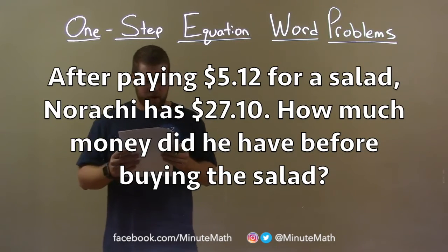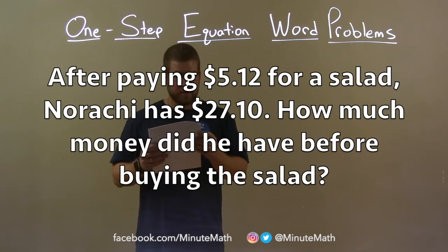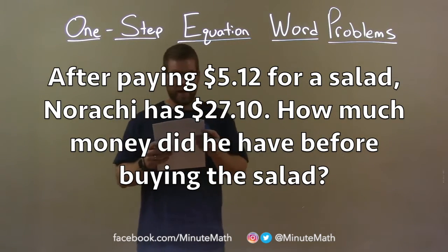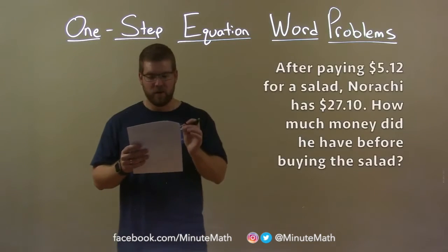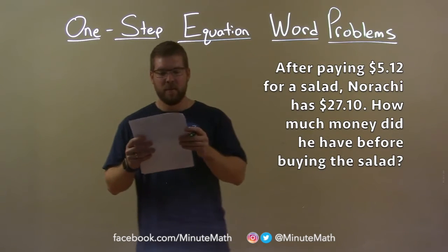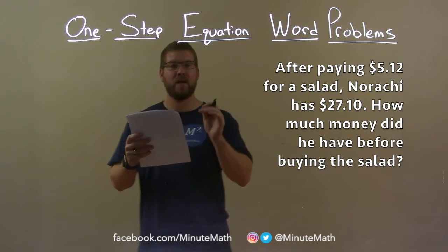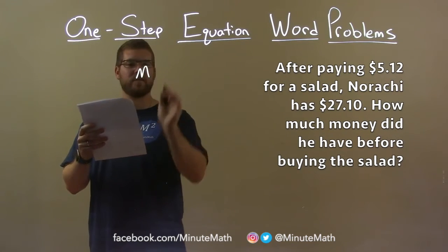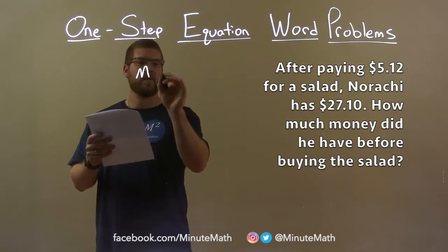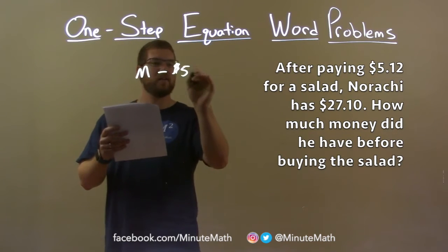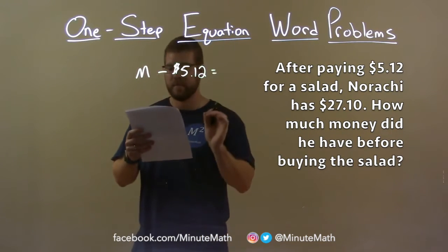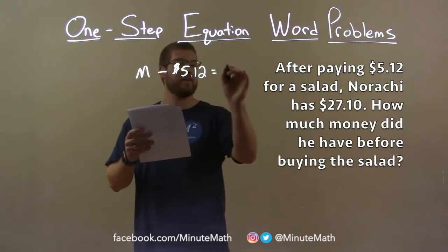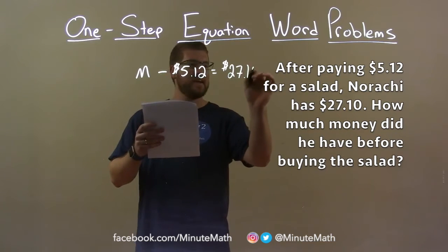After paying $5.12 for a salad, Norachi has $27.10. How much money did he have before buying the salad? His initial money M, subtracted by the cost of the salad, $5.12, equals what he has after paying for the salad — $27.10.